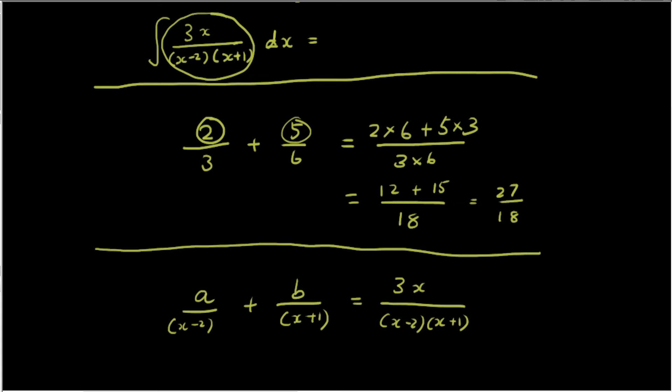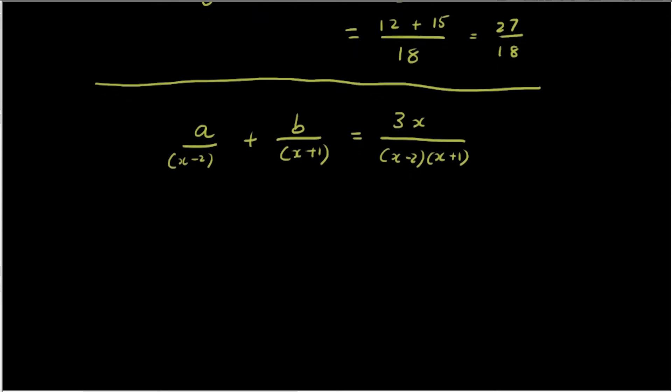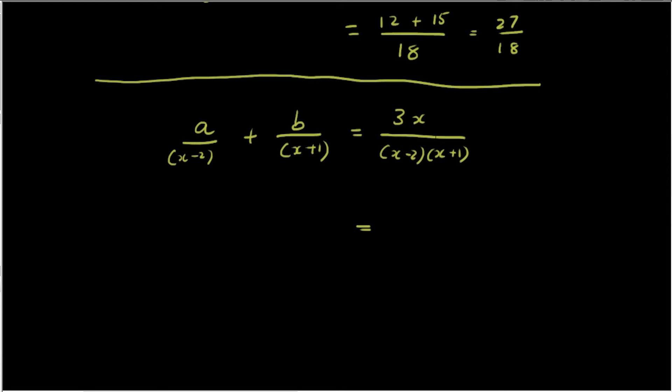So now if I leave the right hand side as 3x over (x - 2)(x + 1), what will the left hand side become? The left hand side will become, as you guys remember when combining fractions, the bottom times the bottom, so it'll be (x - 2) times (x + 1). And then the top becomes what's on the top multiplied by the denominator on the other side, plus what's on the top multiplied by the bottom on the other side.